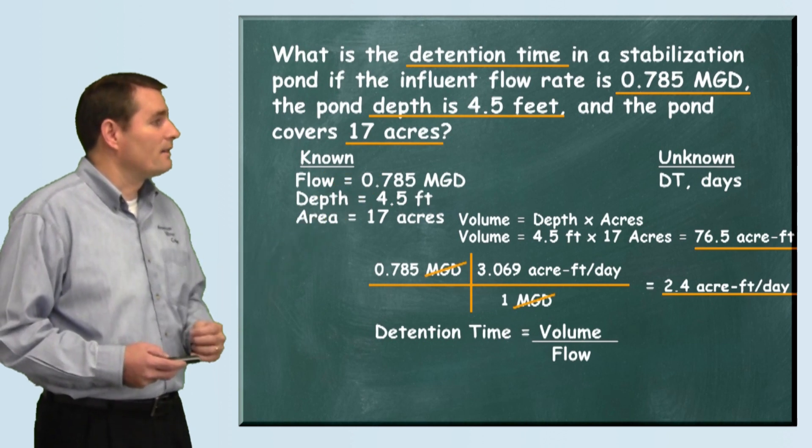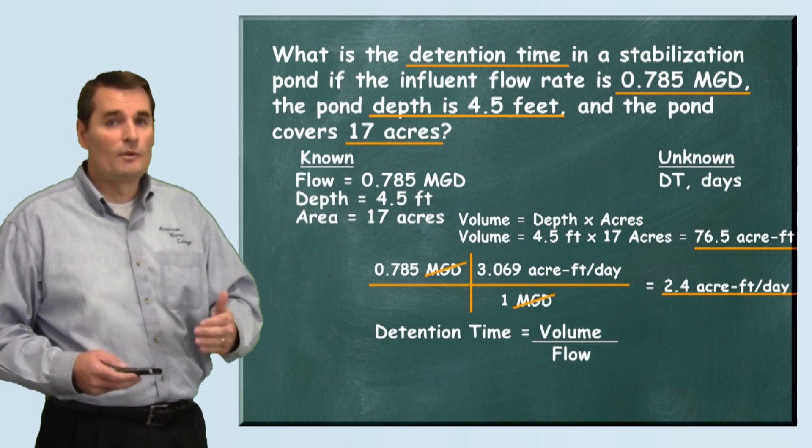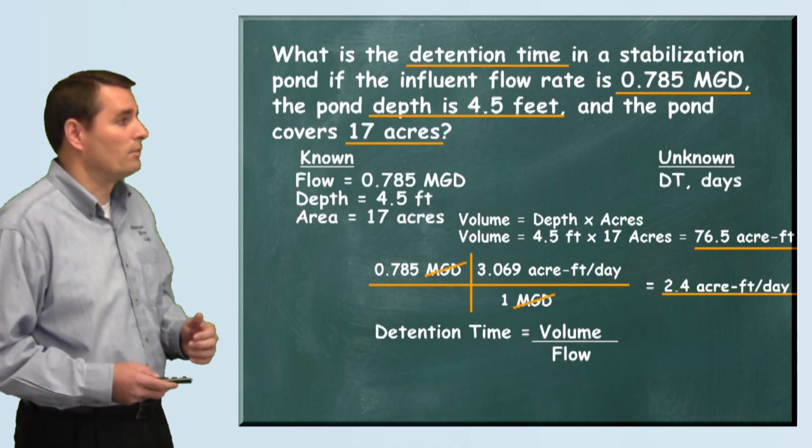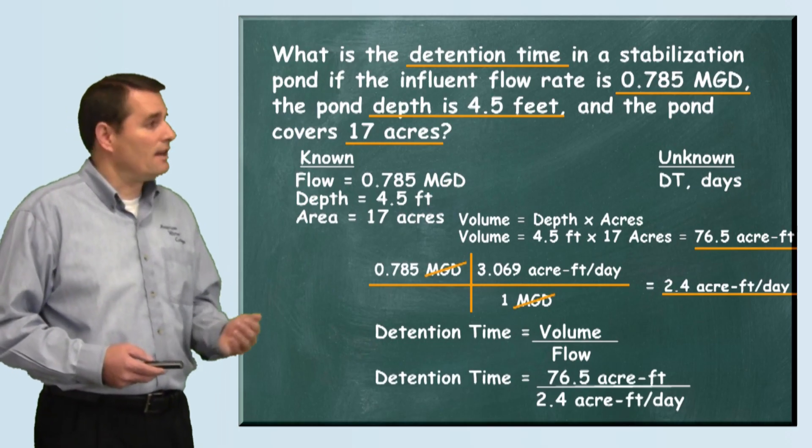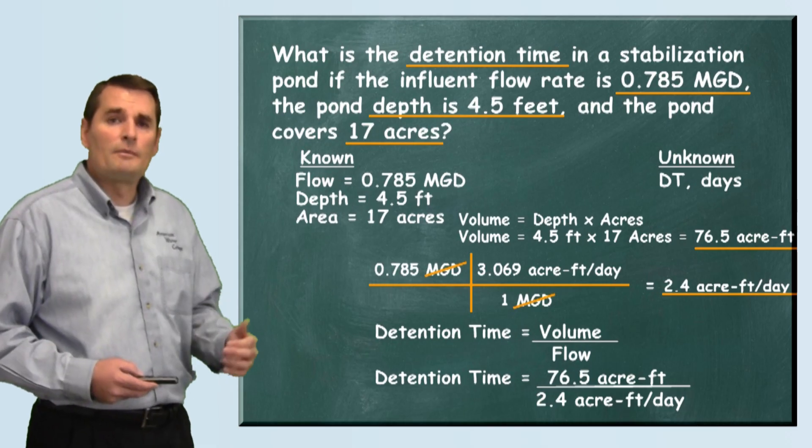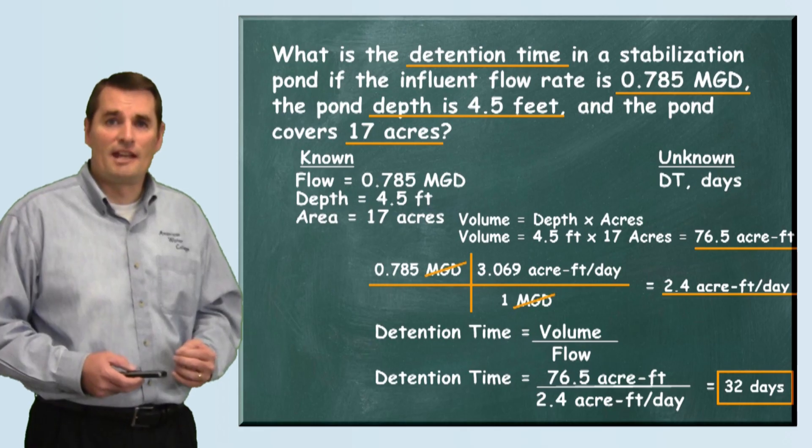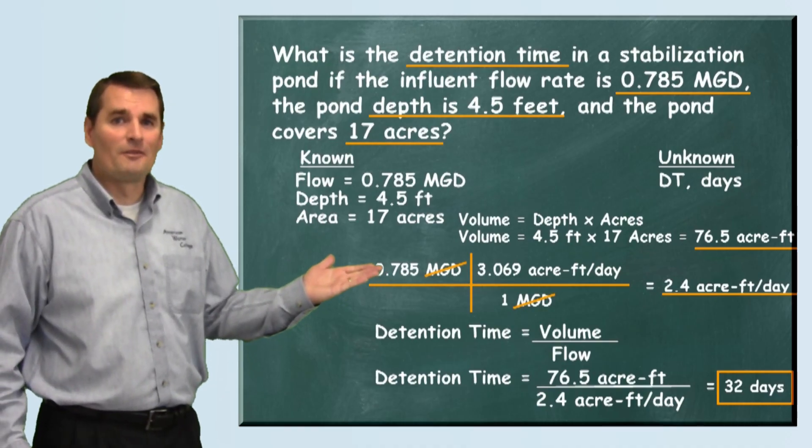Now that we have the volume and the flow going in, we can plug that into our detention time formula to solve this problem. So we put the 76.5 acre-feet on top of the 2.4 acre-feet per day. When we divide this out and do the math we find that the detention time is 32 days. And that my friend is how this problem is solved.